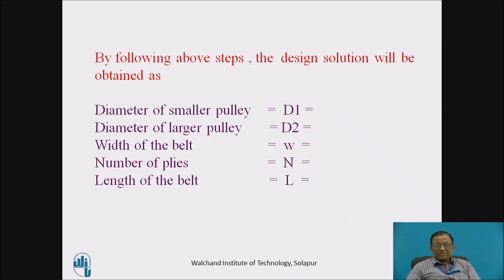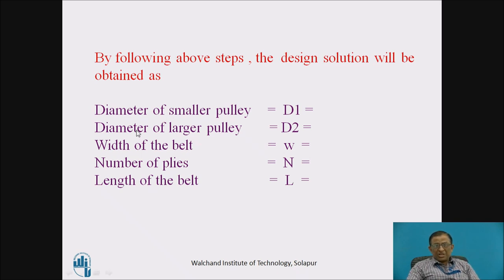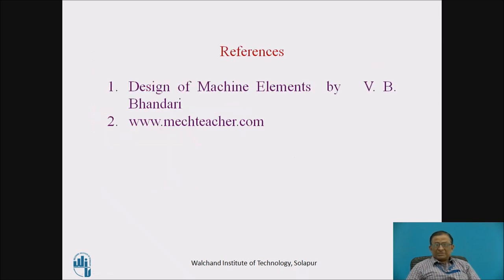This completes the design procedure for a flat belt drive using manufacturer's data, covering all practical applications. The design outputs are: diameter of smaller pulley D1, diameter of larger pulley D2, width of belt W, number of plies N, and length of the belt. References are shown for further reading. Thank you.